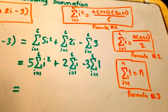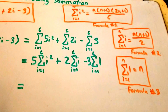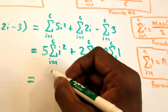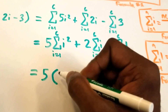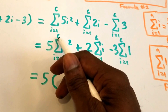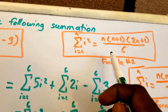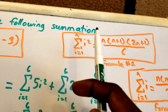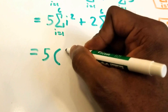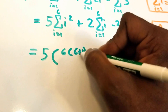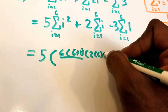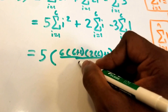Now we can plug in the values for n and solve our equation. We have i squared here, so our n value is going to equal 6, and we're going to use the first formula, replacing n with 6. So we get 6 times (6 plus 1) times (2 times 6 plus 1) all over 6.